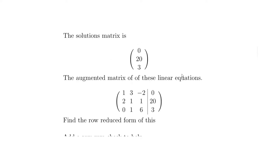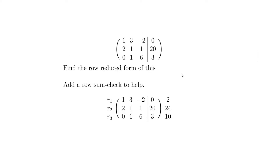To help us along I've labeled the rows: row one, row two, row three. I'll also put a row sum check so we know we've done the right calculations. Each row's values add up to give a total — so 1+3-2+2 = 4, 2+2+1+20 = 25, wait — 1+3 is 4, minus 2 is 2, plus 1 is... the row sums are 2, 24, and 10.